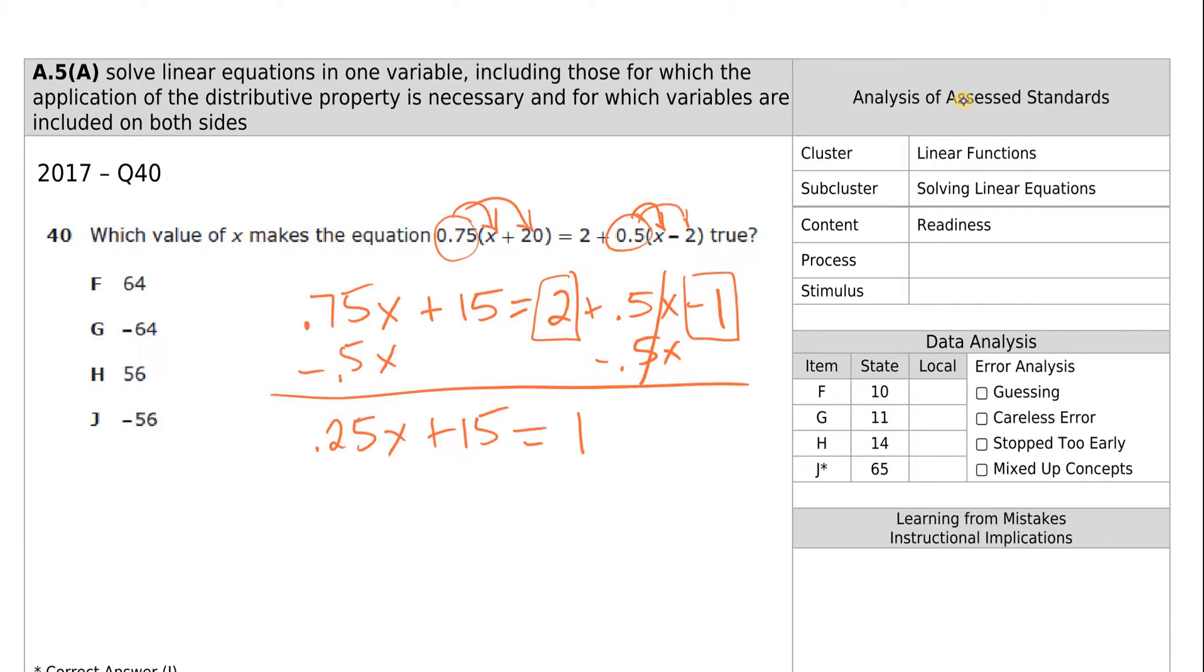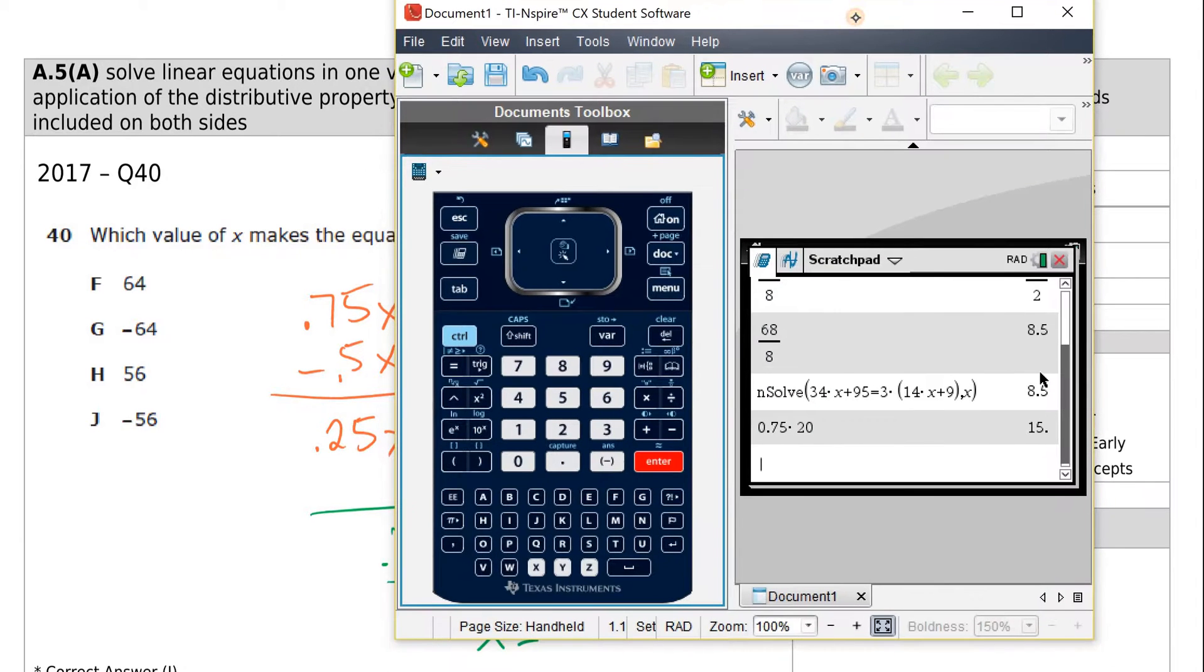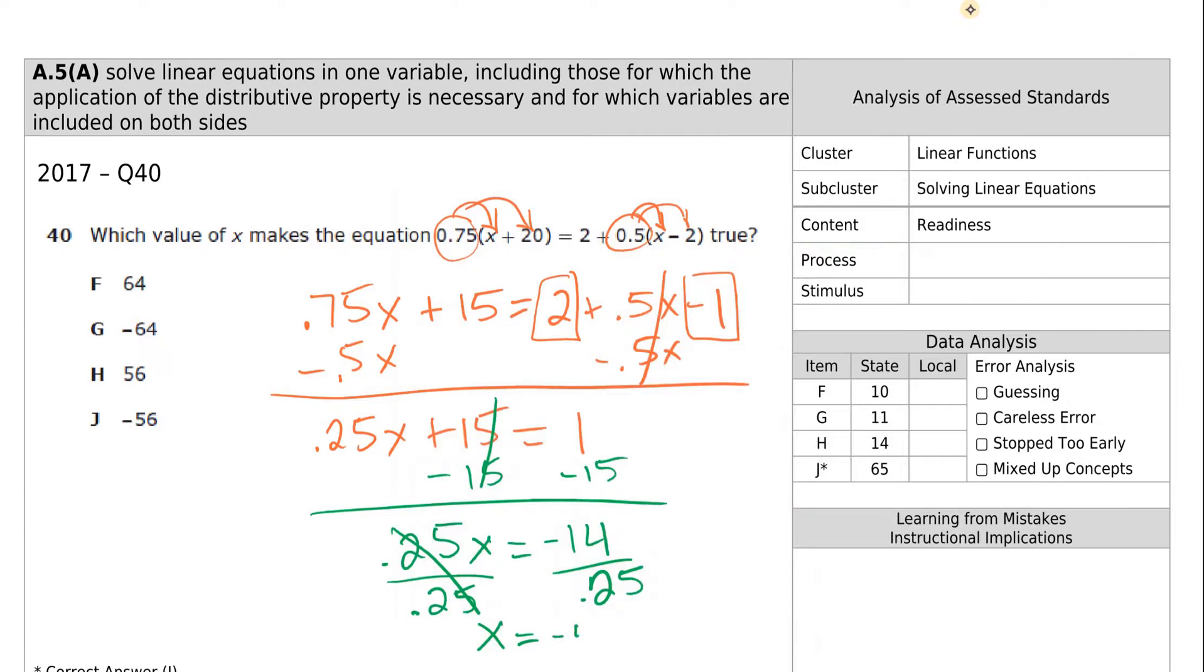We want to get the variable on its own, so we do the opposite. Minus 15, minus 15. 0.25x is equal to negative 14. Divide by 0.25, divide by 0.25. x is equal to negative 14 divided by 0.25. We get negative 56. The answer is J.